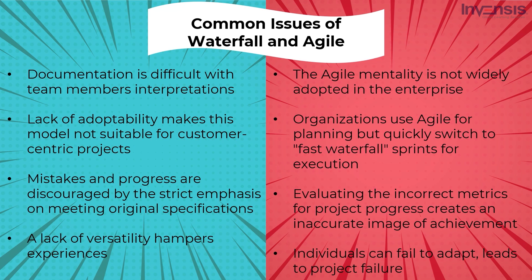Organizations use Agile for planning but quickly switch to fast Waterfall sprints for execution. Agility is not truly planned and embedded during execution, and there is no consistent framework design for enhancing or modifying program features. Iterating based on consumer input adds to the difficulty, and companies are compelled to use the conventional Waterfall model to resolve each problem. The Agile mentality is not widely adopted in the enterprise, and evaluating incorrect metrics creates an inaccurate image of achievement. Critical performance flaws are not found until the SDLC pipeline is too far along.